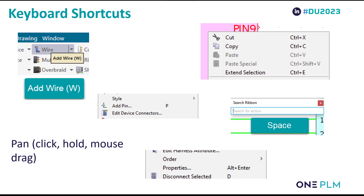These aren't all the shortcuts available in Solid Edge Wire and Harness Design, but these are the ones we found most useful. We have the normal Windows functions: Ctrl+C for copy and Ctrl+V for paste. We can also launch commands by pressing a button on the keyboard — wires can be launched by pressing the W key; extra pins can be created on a device by clicking the device and pressing the P key; and we can quickly open a component's options by selecting it and pressing Alt+Enter. If we can't find a command, press the Space key to launch the command finder. We can also pan our designs by clicking and holding the left mouse button for a second, then dragging.